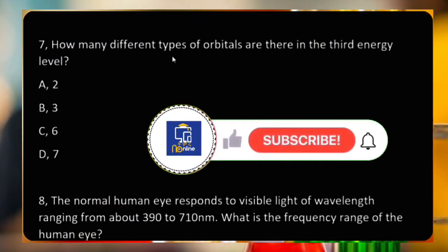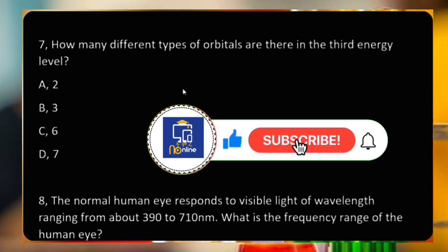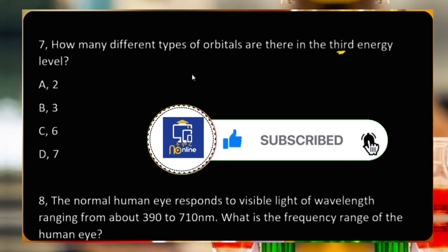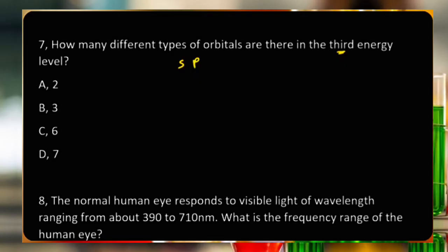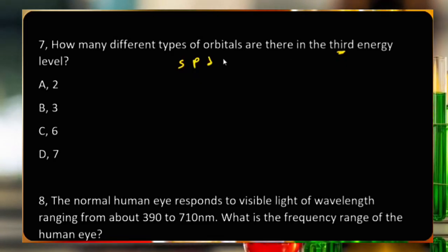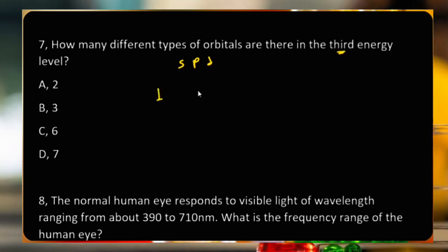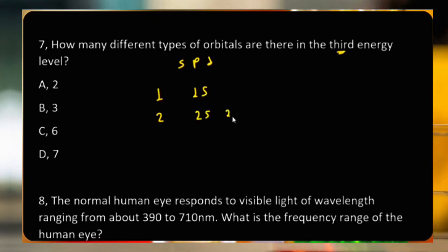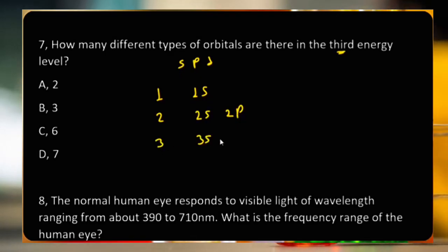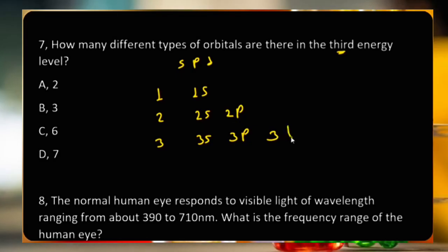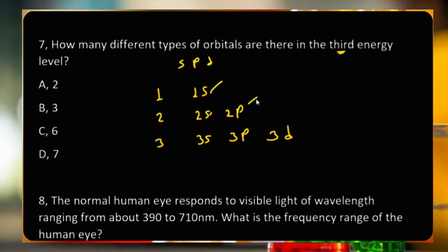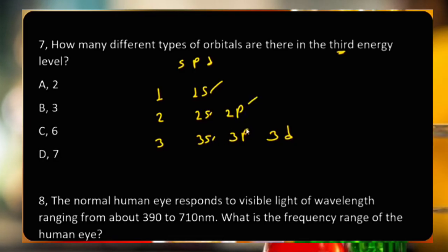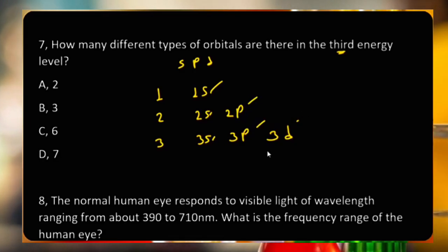How many different types of orbitals are there in the third energy level? In the third energy level there are 3s, 3p, and 3d orbitals — that is s-type, p-type, and d-type. So there are three types of orbitals in the third energy level. The answer is B.